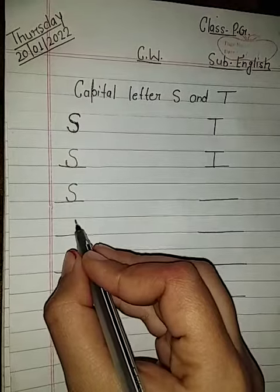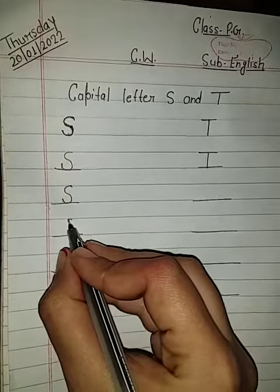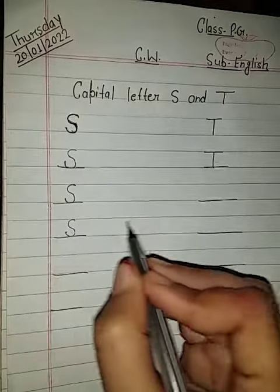Let's see how to write S. One half small circle and again, half a small circle. This is S.